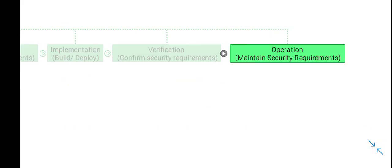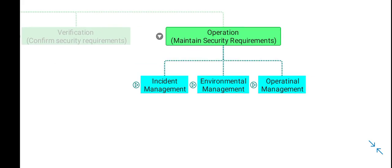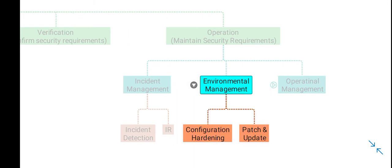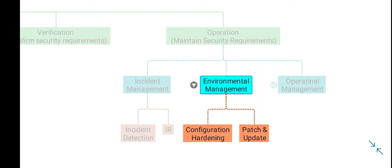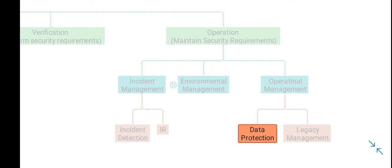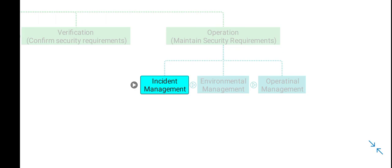The last phase is when the software is operational in a production environment, where you have to maintain security requirements. You perform incident management — detection and incident response — and secure environmental management by hardening the configuration of the software or different systems using it, and ensuring patches and updates are applied. In operational management you ensure data protection for data interacting with the software, and perform secure management of legacy systems or applications interacting with it.